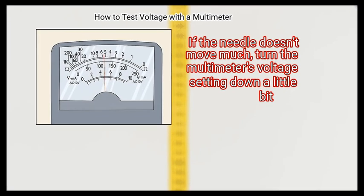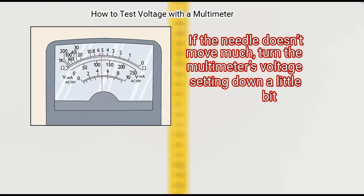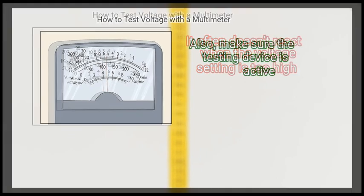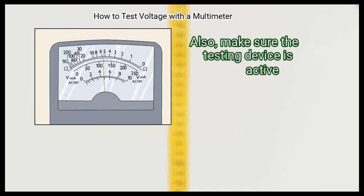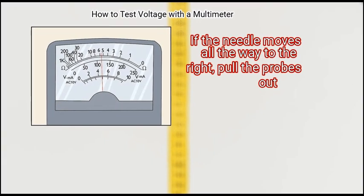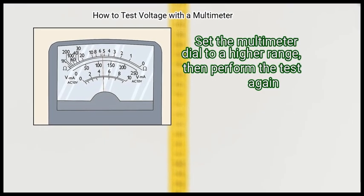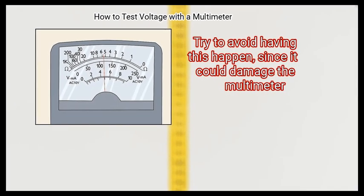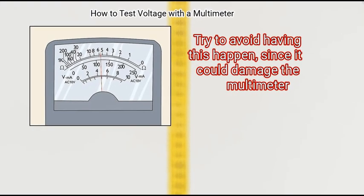If the needle doesn't move much, turn the multimeter's voltage setting down a little bit. It often doesn't react when the voltage setting is too high. Also, make sure the testing device is active. If the needle moves all the way to the right, pull the probes out. Set the multimeter dial to a higher range, then perform the test again. Try to avoid having this happen, since it could damage the multimeter.